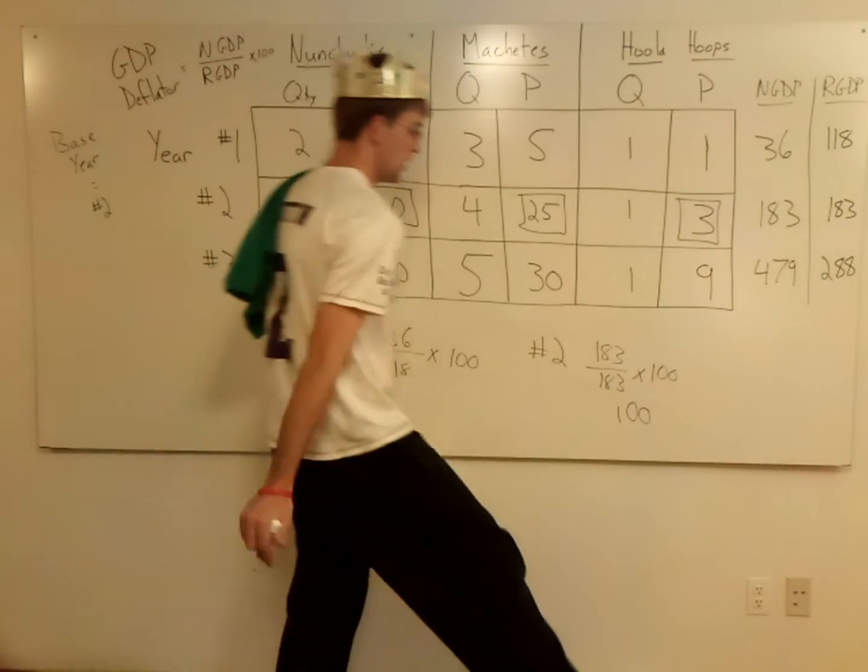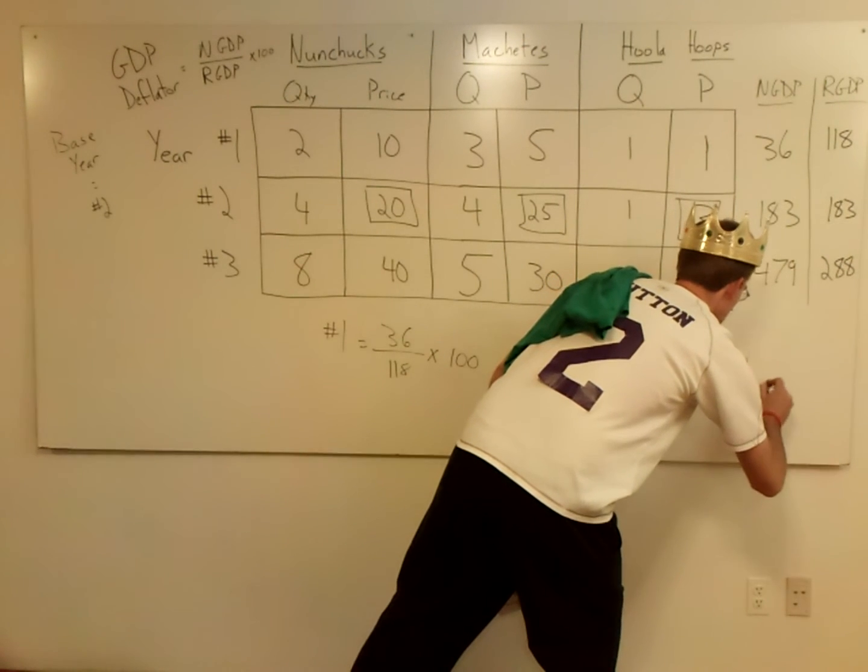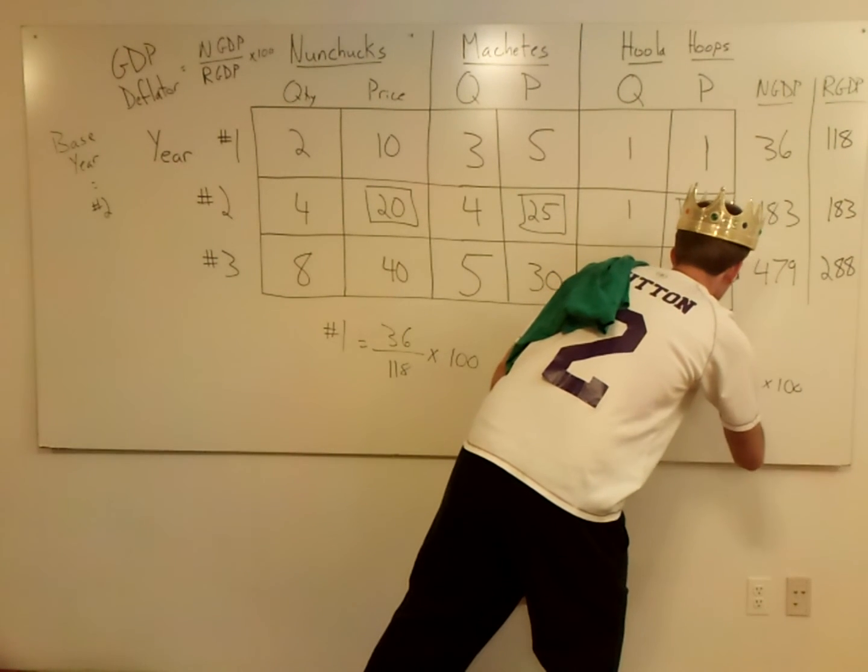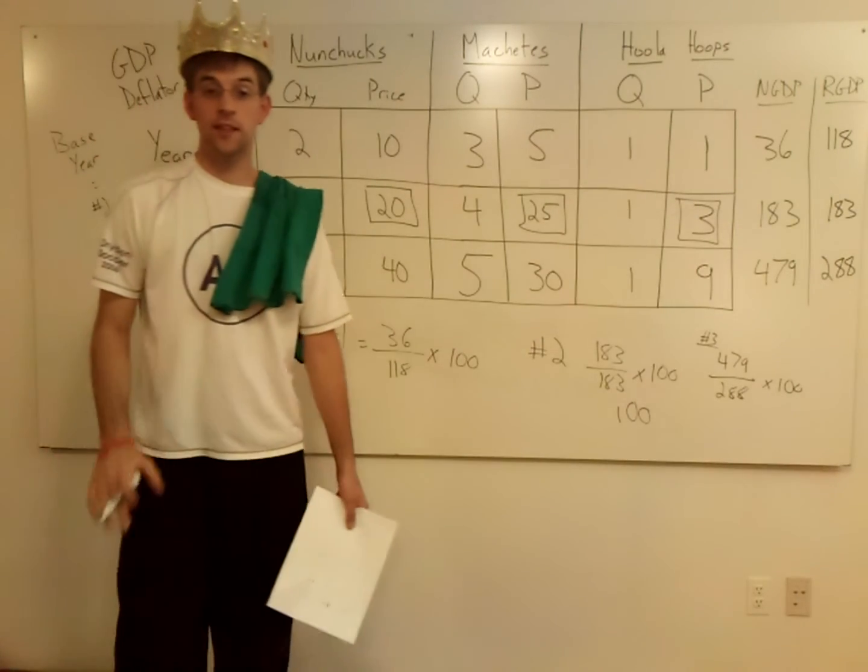The final one, you end up with 479 over 288 times it by 100. That's how they set up, and that's how you solve them.